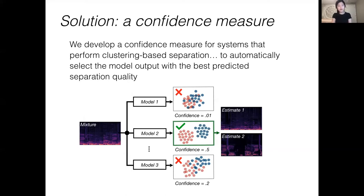In particular, our confidence measure does not require any training nor access to the training distribution for each model. We believe this can transform the range of applications where source separation can be applied. In the previous example, where we move from an indoor social setting to an outdoor setting, we can use this method to build a hearing aid that can automatically switch models from one trained to separate speech from speech to a model trained to separate environmental sounds.